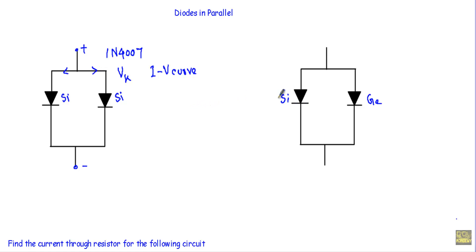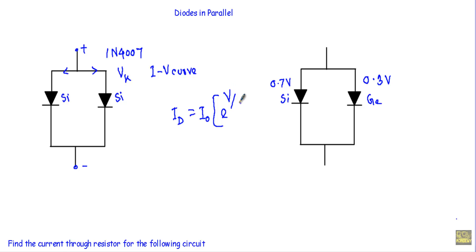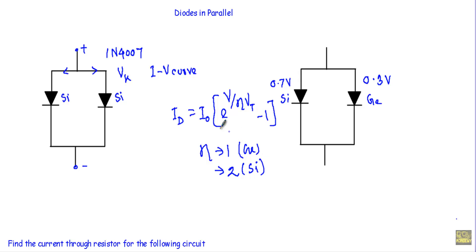Now consider a silicon diode connected in parallel with a germanium diode. Their characteristics are quite different. The silicon diode has a built-in potential of 0.7V, while the germanium diode has a built-in potential of 0.3V. The diode current equation is Id = I0 × (e^(V / η·Vt) − 1), where η is the ideality factor — equal to 1 for germanium and 2 for silicon. This means the IV curve of the silicon diode will be less steep than the germanium diode's.